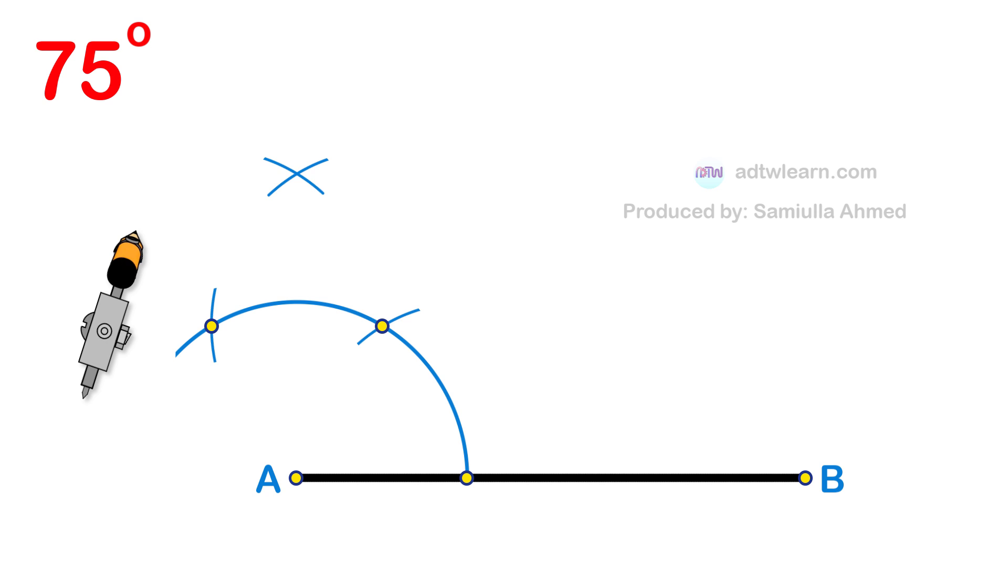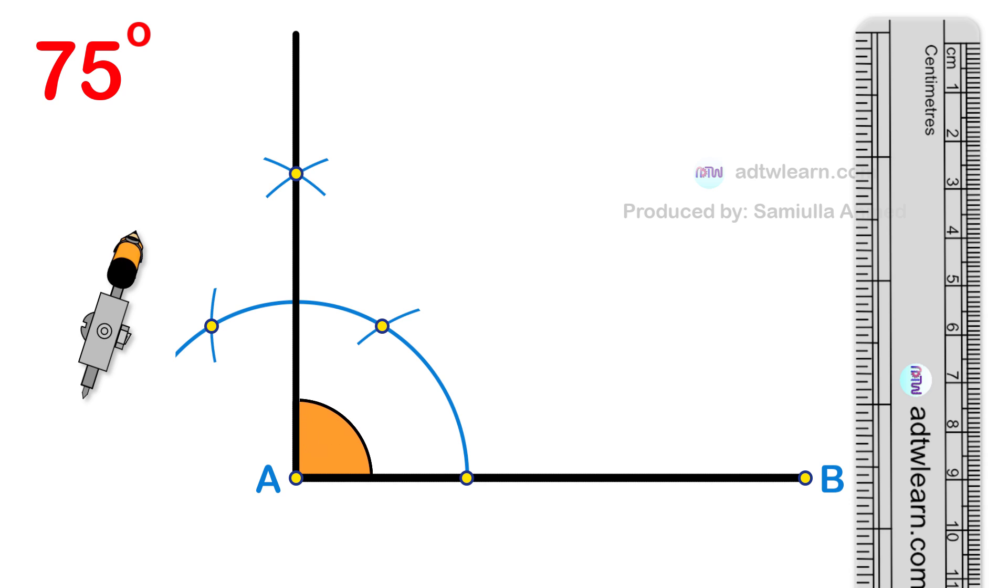Draw a line passing through this point from endpoint A of the line. This angle will be 90 degrees. Now we can construct a 75 degree angle here.